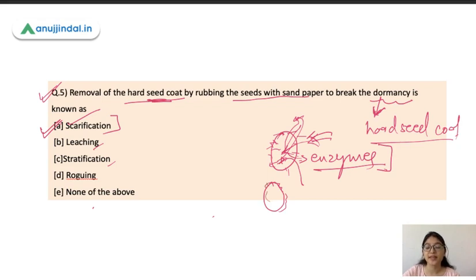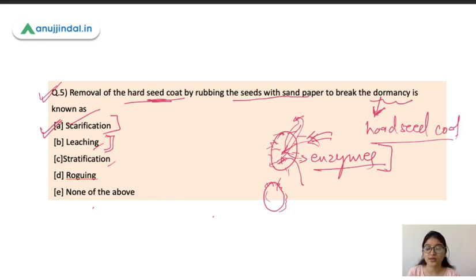For the hard seed coat, scarification is used. Another reason for dormancy is growth inhibitors — hormones or chemicals that prevent the seed from germinating. To address this, leaching is done: seeds are soaked in particular chemicals like KNO₃ or CS. The growth inhibitors are leached out, the seed is cleaned with fresh water, and then it germinates.